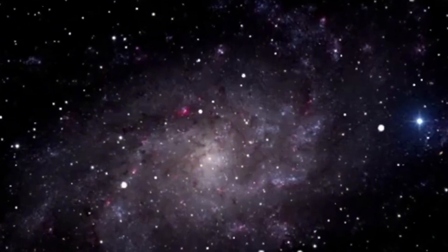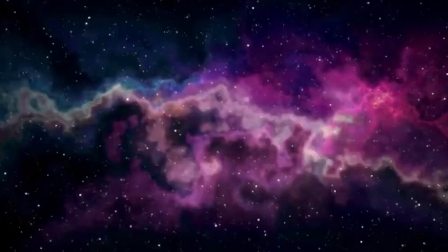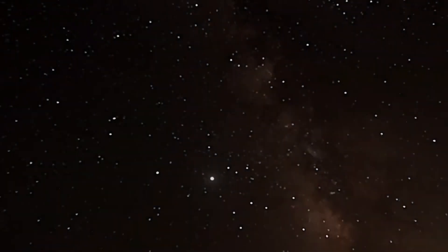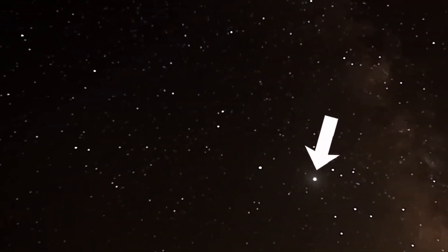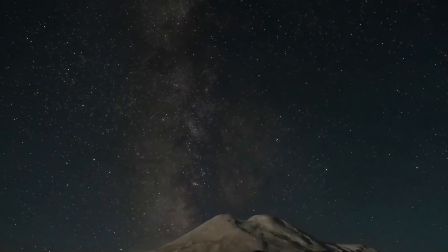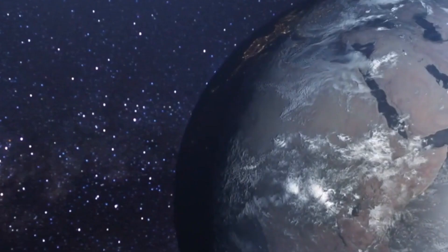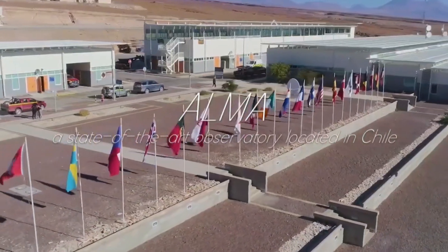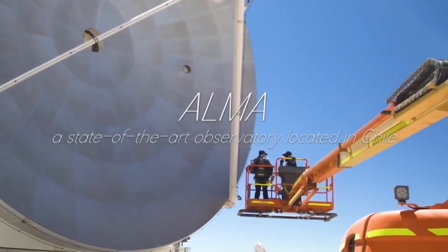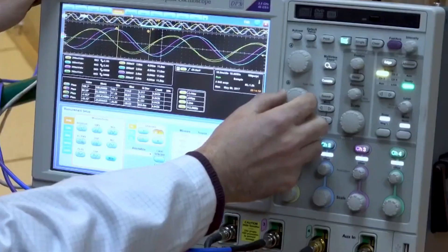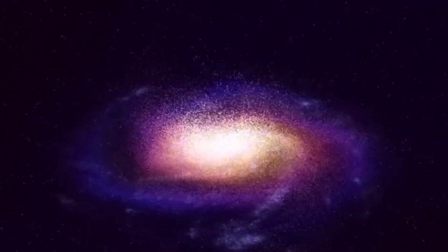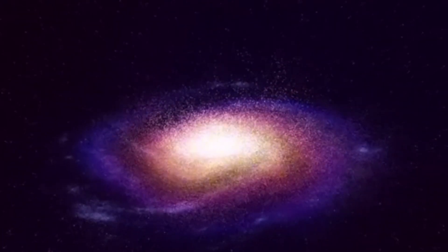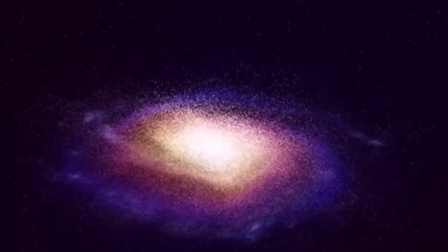Fortunately, Betelgeuse's supernova wouldn't pose any threat to humans, as it's still significantly far away. Binoculars and telescopes would enable us to observe the event for an extended period without harm. However, such a dramatic event wouldn't go unnoticed. Historically, supernovae were often interpreted as bad omens, and Betelgeuse's demise could elicit intriguing reactions worldwide. Astronomers believe it could even reignite widespread interest in astronomy, awakening people from their unawareness on a civilization-wide level.